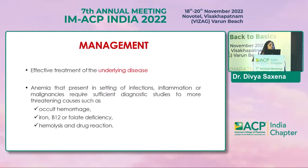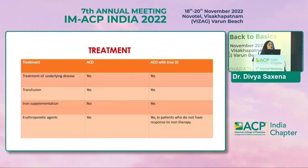Regarding management, the most basic approach is to treat the underlying disease. If present in the setting of infections, inflammations, and malignancy, certain other things must always be looked for, such as any occult hemorrhage, iron, B12 or folate deficiency, hemolysis, or any drug reactions. The treatment modalities are blood transfusions, iron supplementation, or erythropoietic agents. Treatment of the underlying disease is really very important in such scenarios.